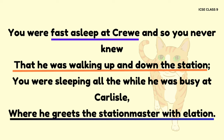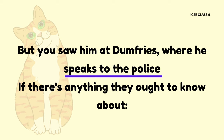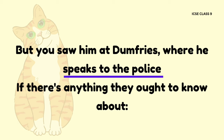You were fast asleep at Crewe, so you never knew that he was walking up and down the station. You were sleeping all the while he was busy at Carlisle, where he greets the station master with elation. In line 54, the phrase 'fast asleep at Crewe' is another example of assonance, showing repetition of vowel sounds. Line 55, 'that he was walking up and down the station,' shows visual description and is therefore an example of visual imagery. Line 57, 'where he greets the station master with elation,' also gives visual description and is an example of visual imagery.